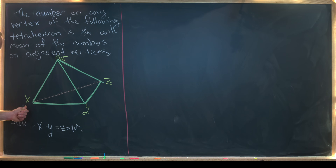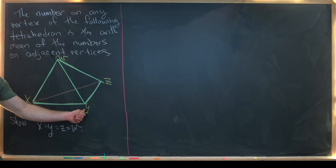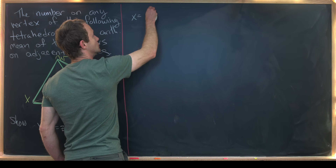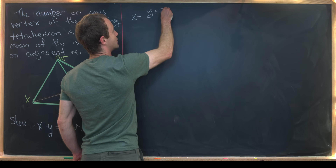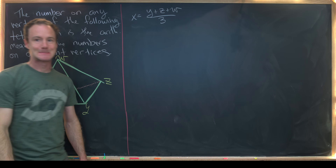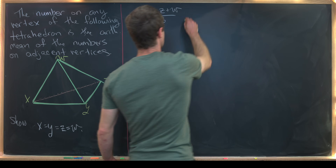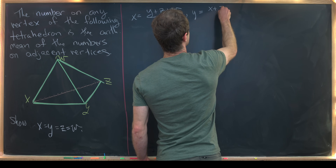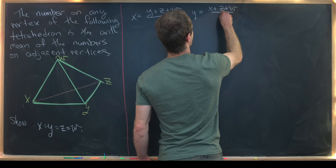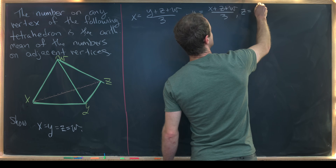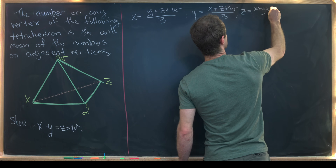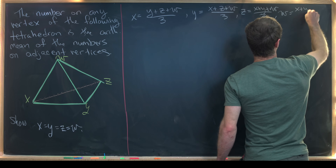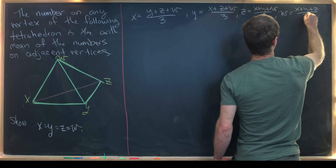Since x is the arithmetic mean of y, z, and w, that tells us that x equals (y + z + w) / 3. We've got similar equations for the rest of the numbers: y equals (x + z + w) / 3, z equals (x + y + w) / 3, and finally w equals (x + y + z) / 3.